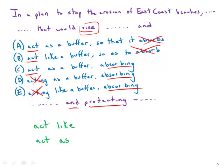So right away, if we just look at the parallel structure, the only answer choice that has both parallel structures correct is answer choice C. So we certainly suspect that is the correct answer. I also want to talk about the idiom 'act like' versus 'act as.'